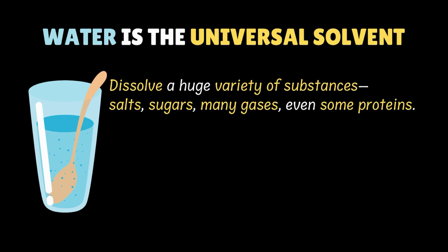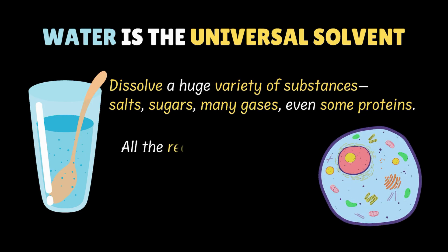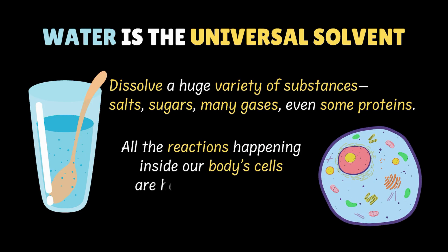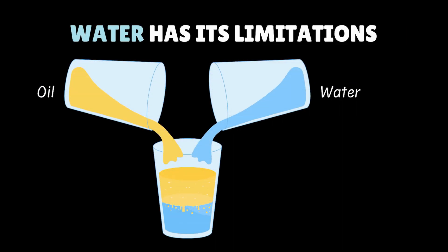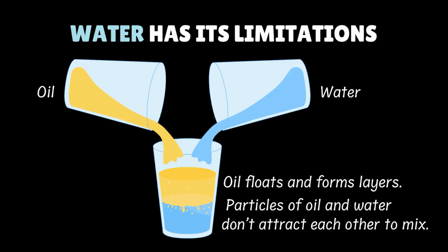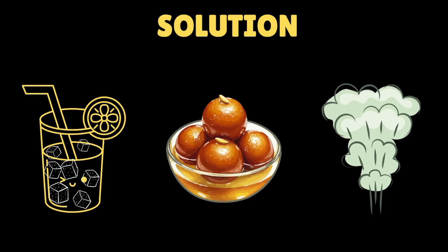That's why water is so essential for life. In fact, all reactions happening inside our body's cells are happening in water solutions. But water has its limitations — try mixing oil with water. Do they blend? No, not at all. Oil floats on the water and forms a layer, because the particles of oil and water don't attract each other enough to mix. So water is a champion solvent, but only for substances that are water-loving. So to sum it up, the next time you sip lemonade, eat gulab jamun, or just breathe, remember — you are surrounded by solutions everywhere.